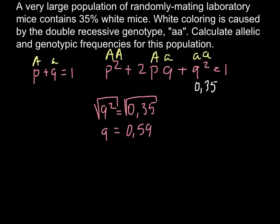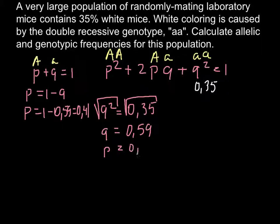From the formula p + q = 1, if we know q, we can find p. p equals 1 - q, so p = 1 - 0.59 = 0.41.